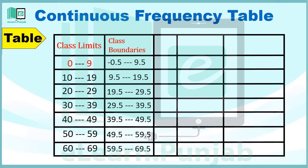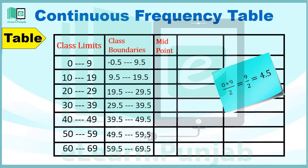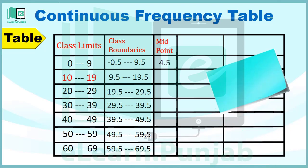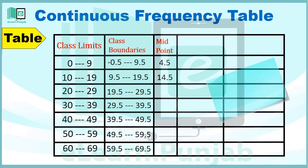49.5 to 59.5 اور 59.5 to 69.5 Class Boundaries کی Values ہوں گی۔ اب ہم Next Column Midpoint یا Class Marks کا بنائیں گے۔ Midpoint کو Class Limit کی Start اور End Value کو Add کرکے 2 پر Divide کرنے سے حاصل کیا جاتا ہے۔ جیسا کہ Class Limit کی Value 0 to 9 ہے، تو 0+9=9 اور 9÷2=4.5 ہوگا — تو 4.5 ہمارا Midpoint یا Class Mark ہوگا۔ اسی طرح 10 to 19 کے لیے 10+19=29 اور 29÷2=14.5 ہوگا۔ اسی طرح 24.5، 34.5، 44.5، 54.5 اور 64.5 حاصل ہوں گے۔